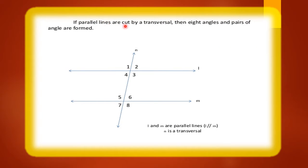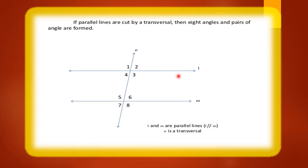If parallel lines are cut by a transversal, then eight angles and pairs of angles are formed. Can you see this? We have eight angles: angle one, two, three, four, five, six, seven, and eight. L and M are parallel to each other and the third line N is the transversal. So if parallel lines are cut by a transversal, eight angles and pairs of angles are formed.